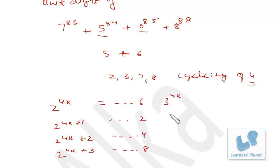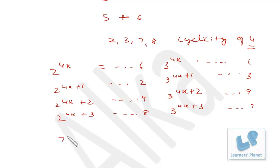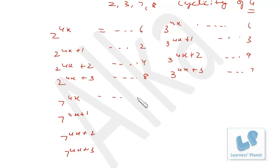Similarly for 3: 3 raised to 4x, 4x+1, 4x+2, 4x+3. And for 7: 7 raised to 4x ends in 1, 4x+1 ends in 7, 4x+2 ends in 9, and 4x+3 — since 9×7=63 — ends in 3.